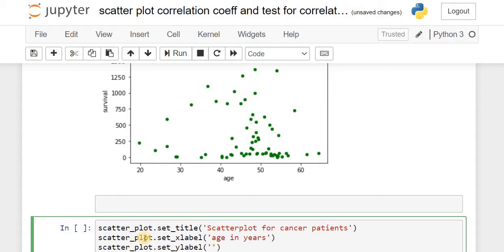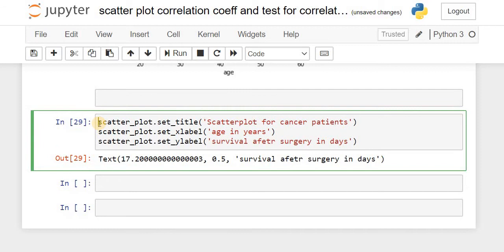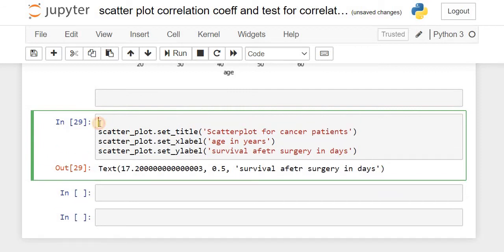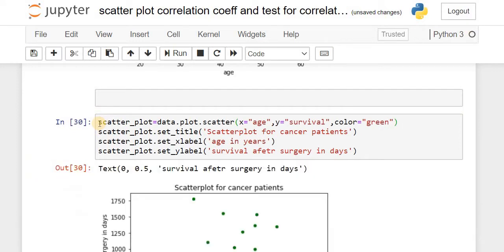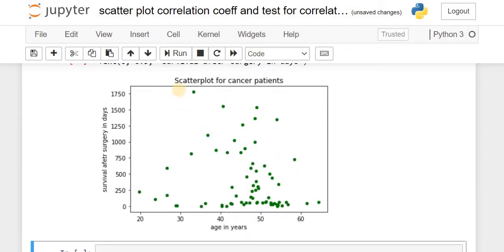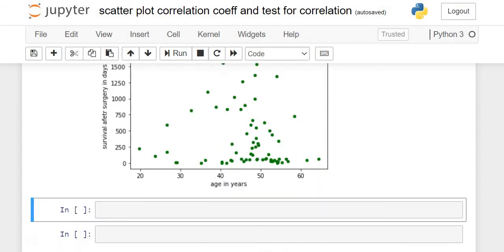Let's run this. See, there is no plot because we forgot the earlier command. The parent command data.plot.scatter is a must for this plot to succeed. Now the graph is in front of you, renamed to 'Scatterplot for cancer patients' with the x-axis as age in years and y-axis as survival in days.